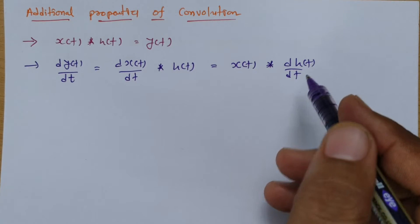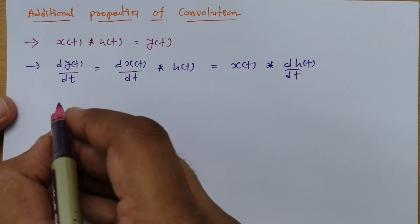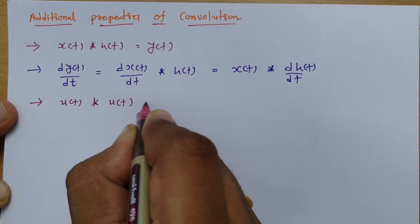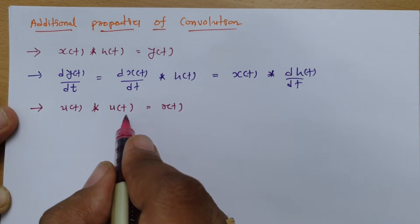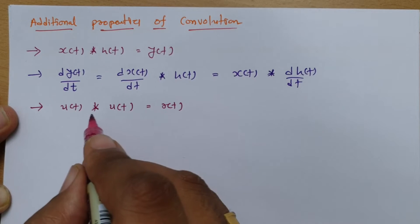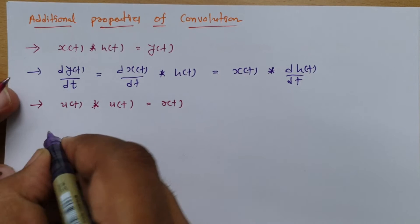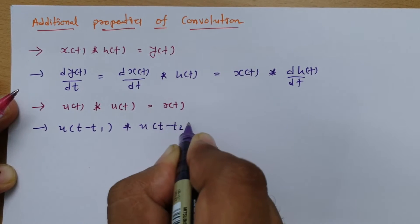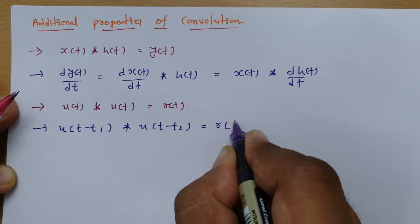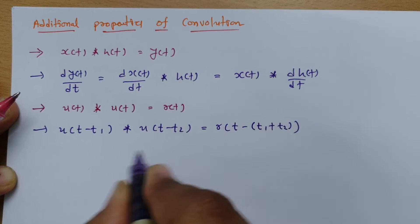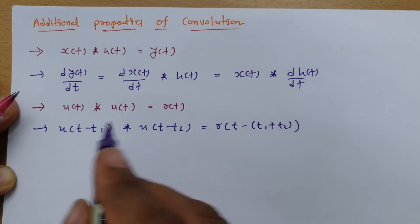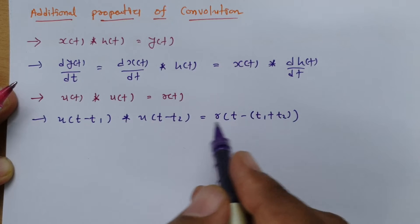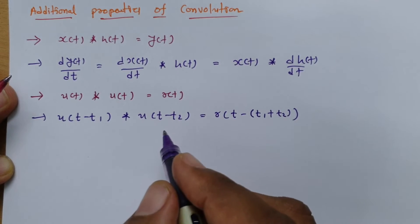One more interesting property is the convolution of unit step signals. If you convolve two unit step signals, the result is a ramp signal. With shifting, if you have u(t − t1) convolved with u(t − t2), the result is R(t − t1 − t2). The shifting values are algebraically added together. So convolution of two unit step signals gives a ramp signal, and any shifts inside are added algebraically.